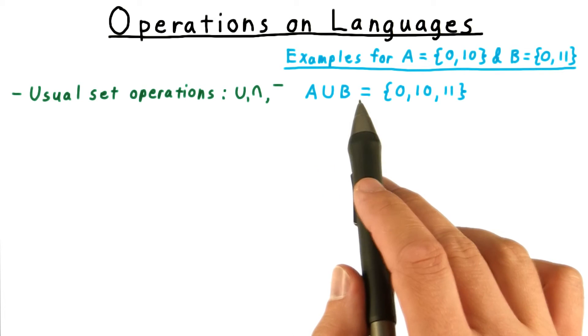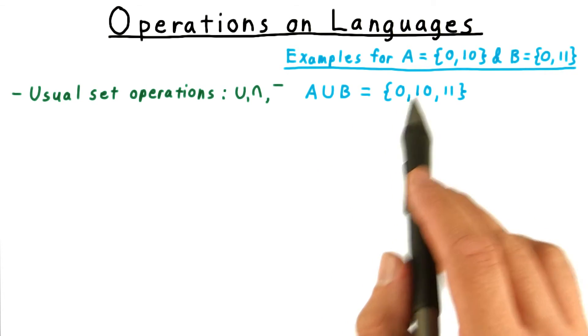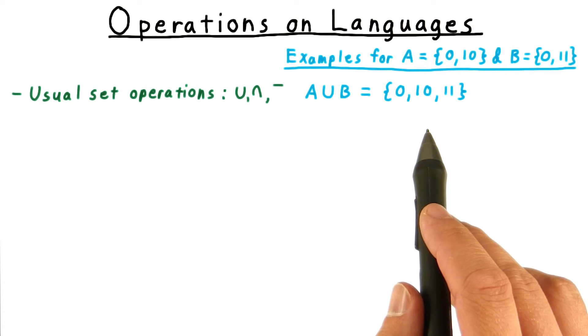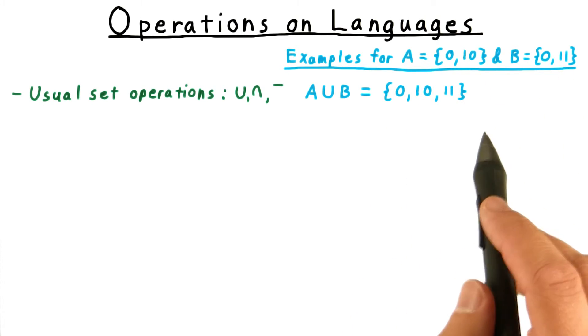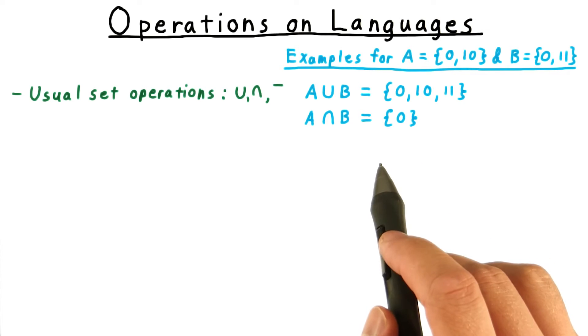For example, A union B consists of these three strings: 0 from both A and B, 10 from A, and 11 from B. The intersection contains only those strings in both languages, just the string 0 here.